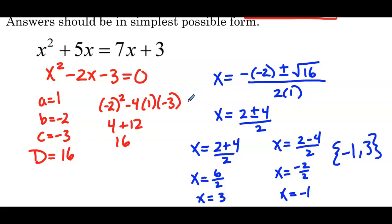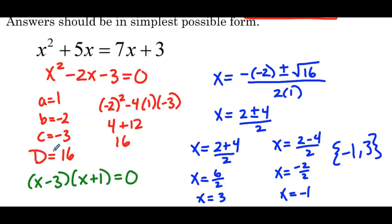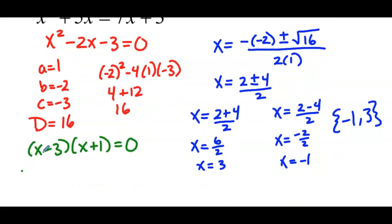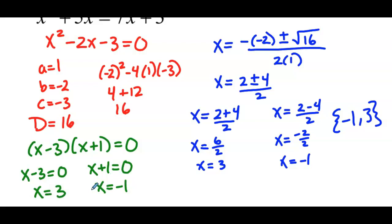Now we had to use the quadratic formula because the directions said so. But what if we didn't have directions and were just told to solve? Let's compare our work to factoring. If we factor this, we'd have x minus 3 times x plus 1 equals 0, giving us x minus 3 equals 0 or x plus 1 equals 0, so x equals positive 3 or x equals negative 1. Way more efficient to solve by factoring when it is possible.